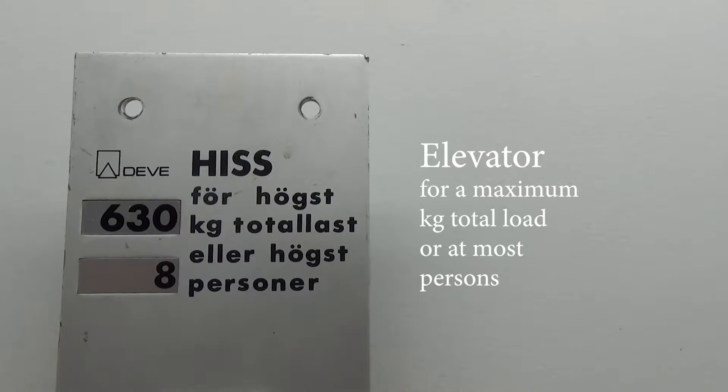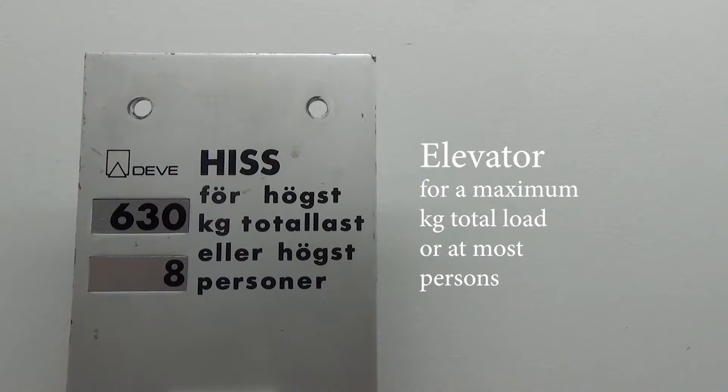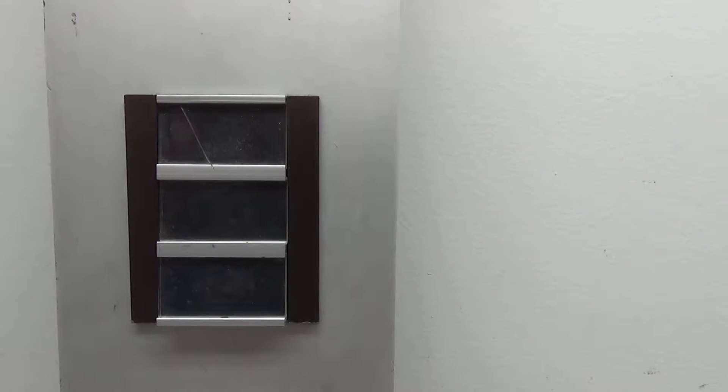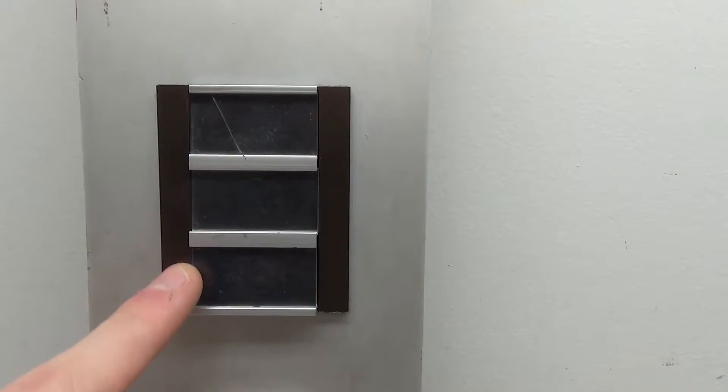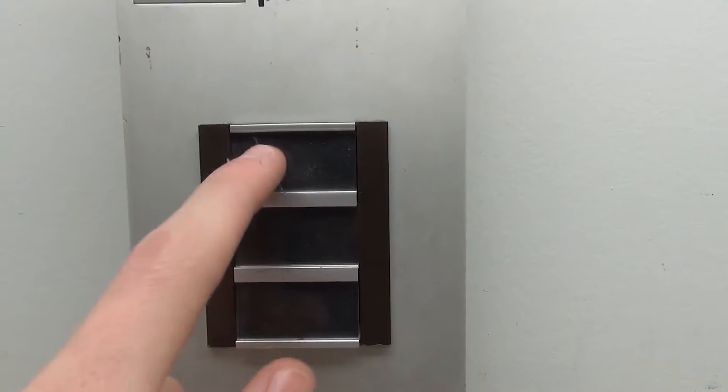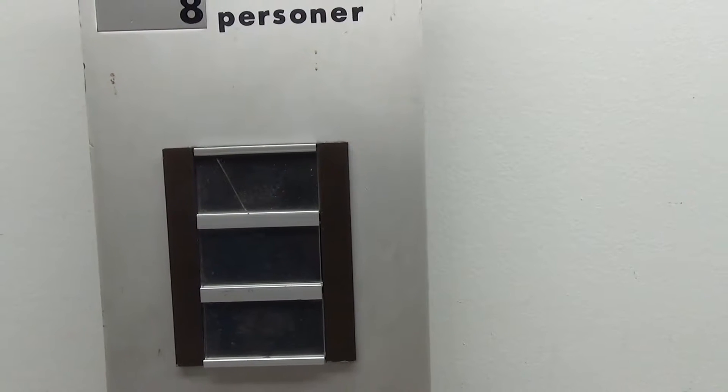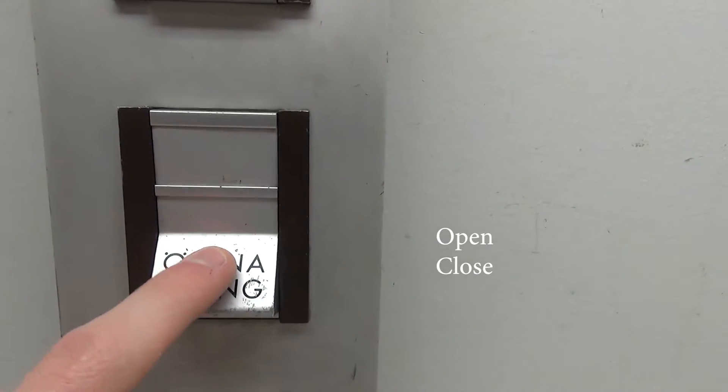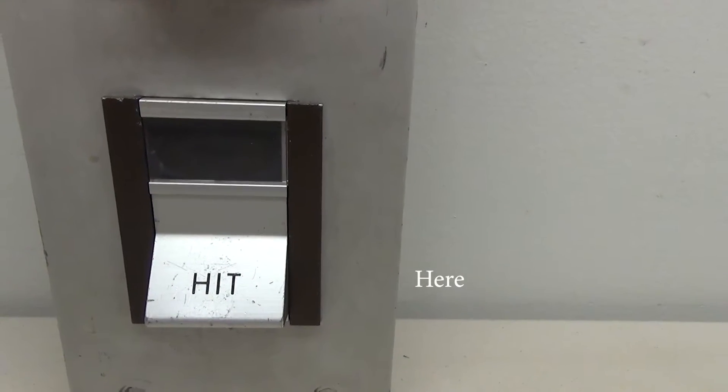So up here at the top we've got the information and the translation on the side. The next bit down, this is where your little indicator lights are. In this case only one of the three actually has a light behind it, but other things could be placed up here if needed. This here is the door button, and down here is the actual call button.